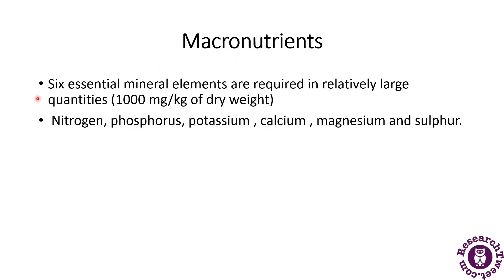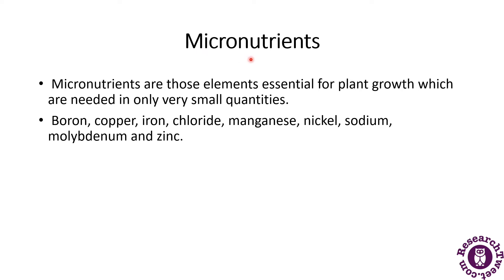Macronutrients are the six essential mineral elements required in relatively large quantities — greater than 1000 mg per kg of dry weight. Examples include nitrogen, phosphorus, potassium, calcium, magnesium, and sulfur. Micronutrients, as the name suggests, are present in very small quantities. Examples include boron, copper, iron, chloride, manganese, nickel, sodium, molybdenum, and zinc.